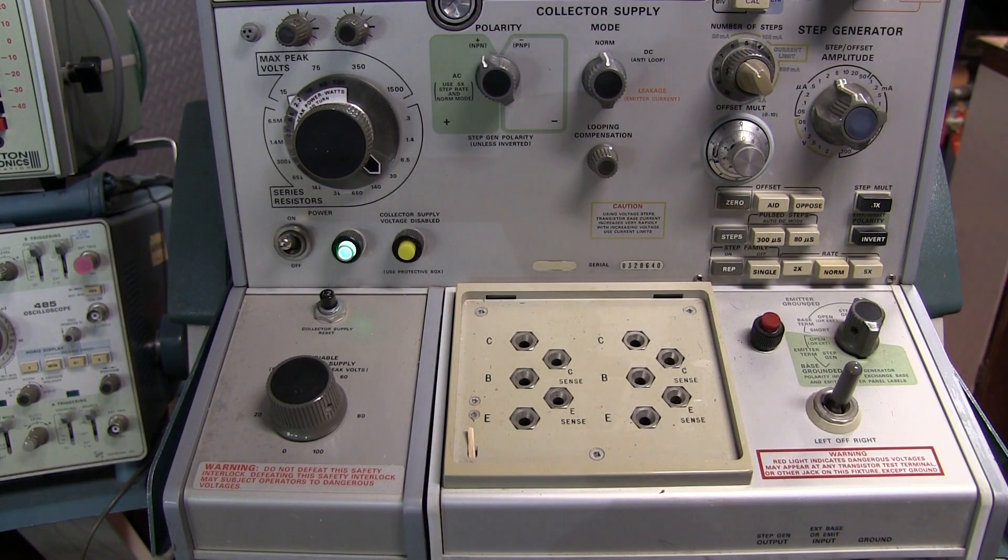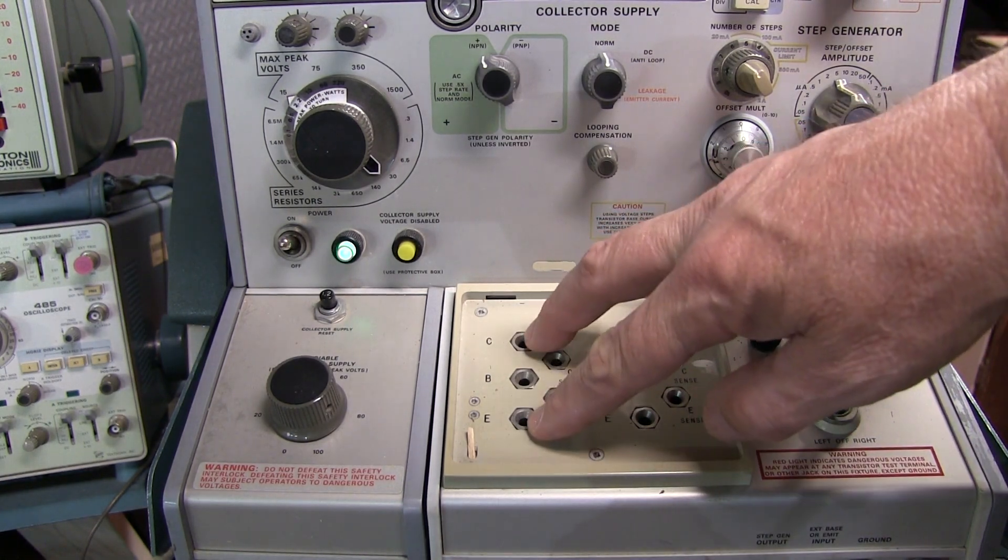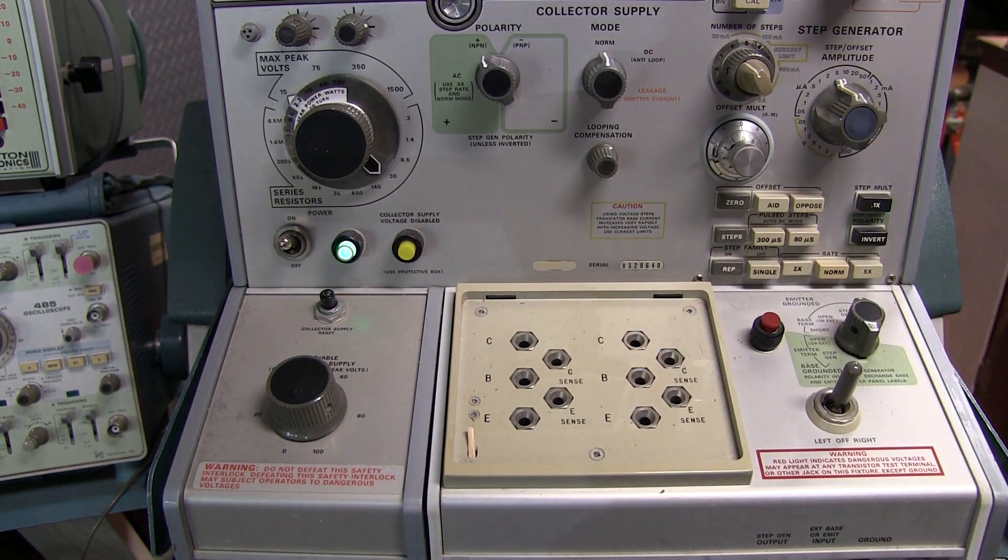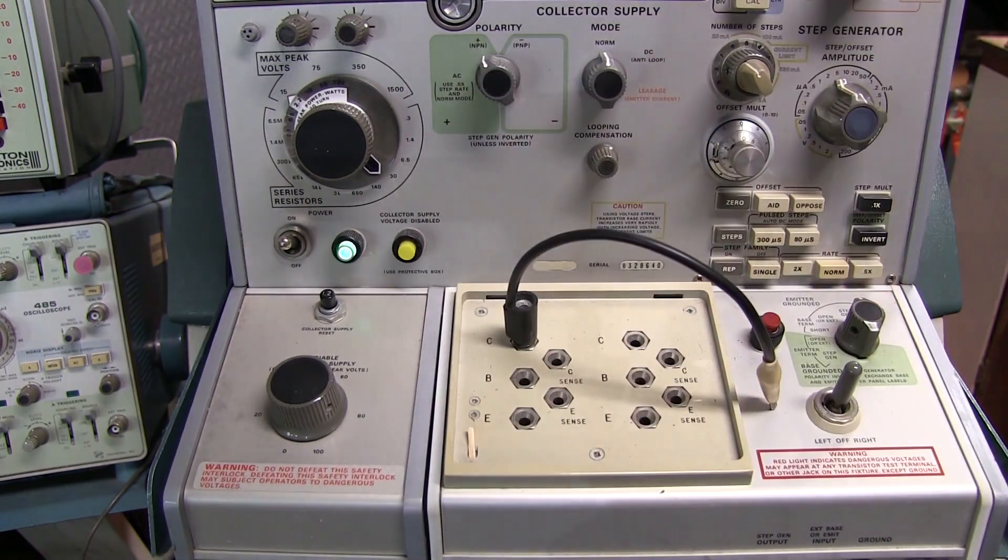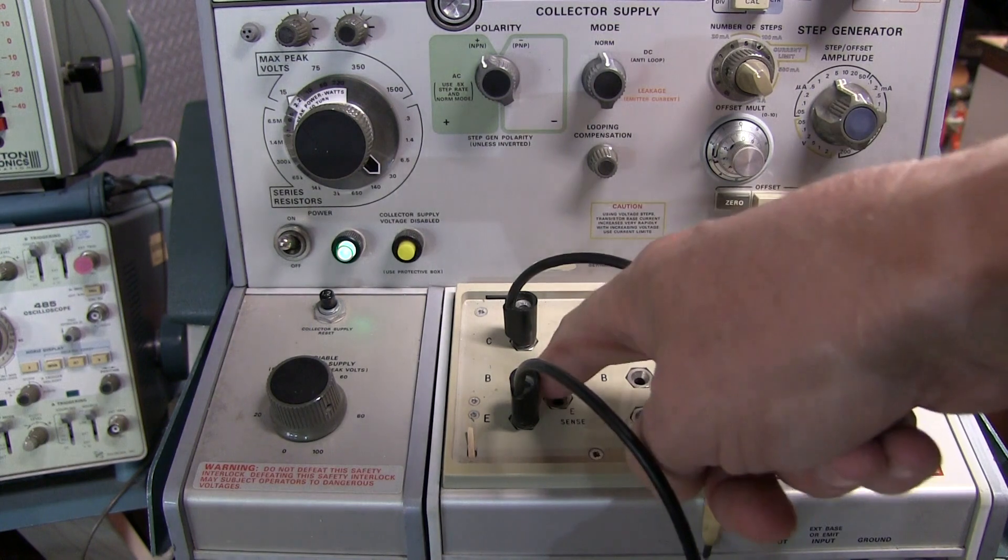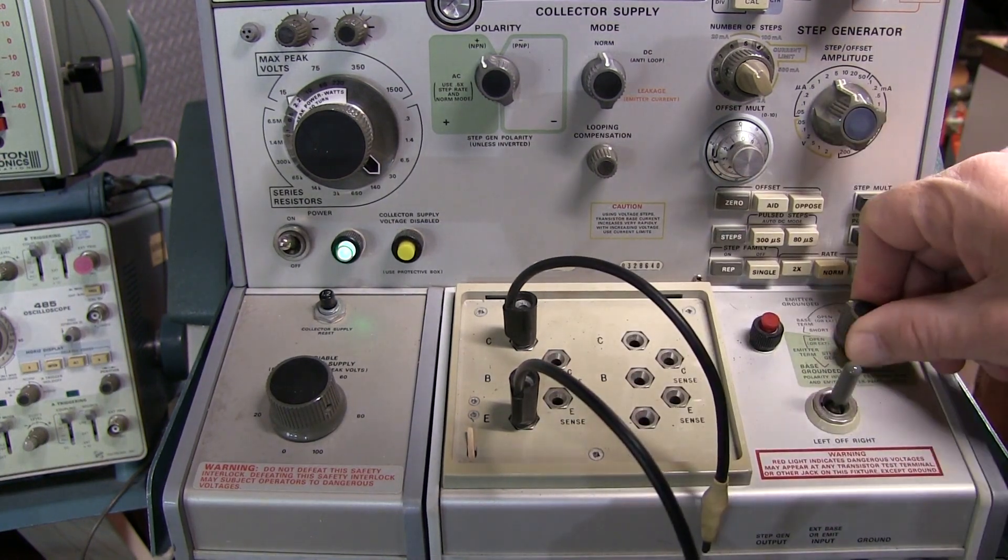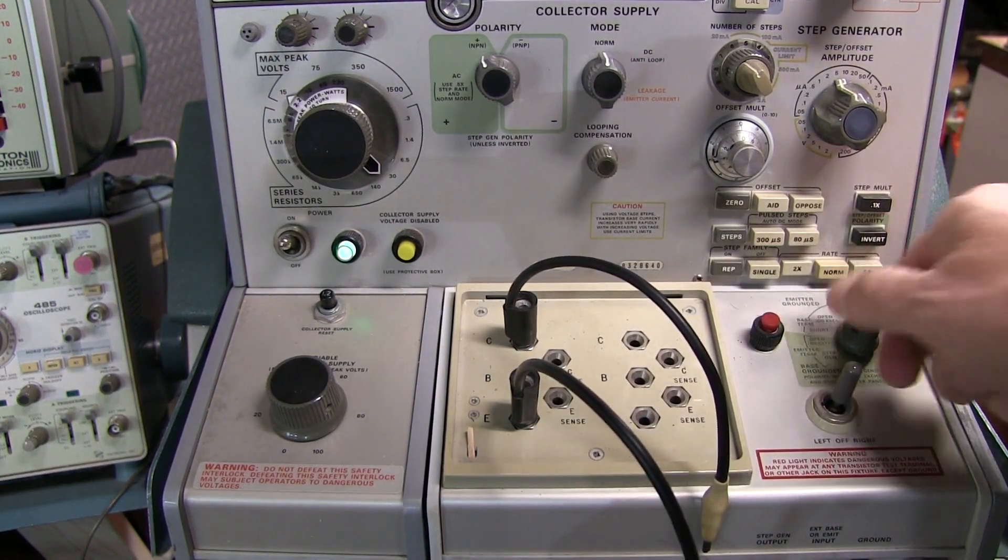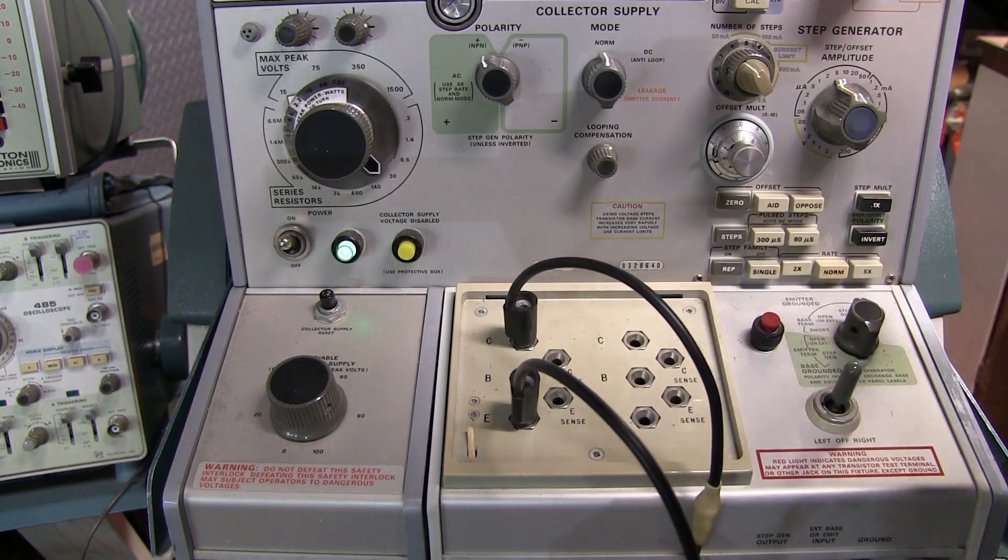Both those devices are essentially two-terminal test devices. So we're just going to use the collector and emitter terminals. So I'll connect up a couple of test leads to those terminals directly. Since we're not using the base terminal, where the base termination switch is set really doesn't matter because we're leaving it open anyway.